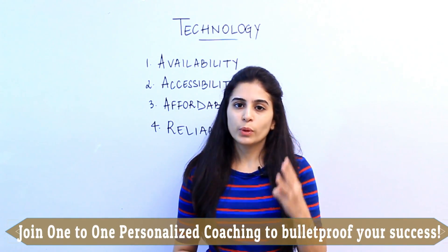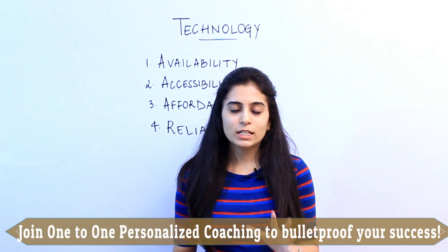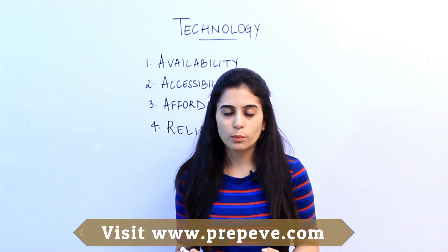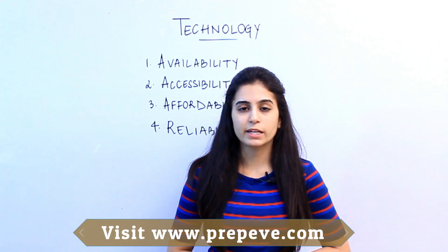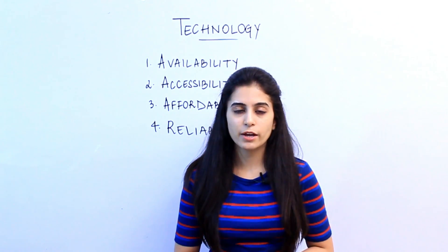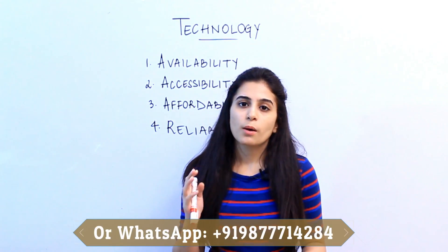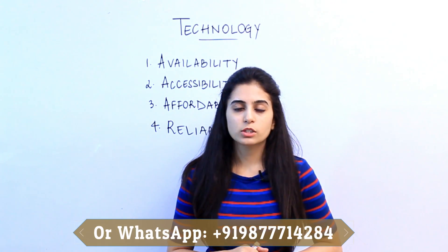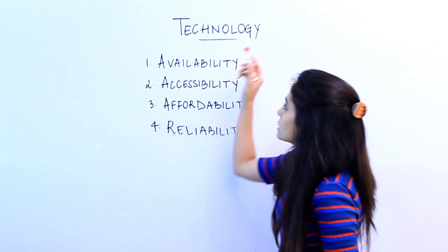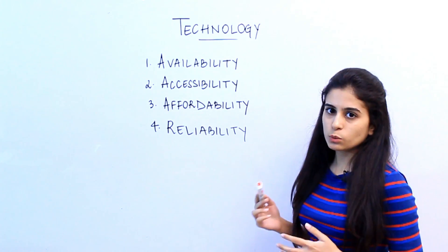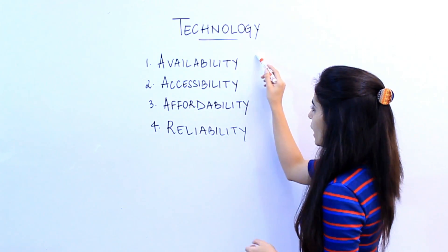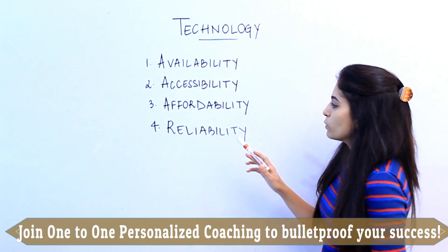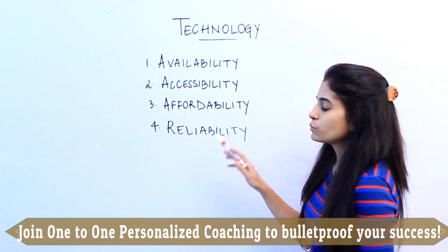Today we will be dealing with 4 generic words — 3 A's and 1 R. These words can be used in any of your essay topics, be it something associated with healthcare, transportation, products, local versus international products, as well as technology. The 3 A's are availability, accessibility, affordability, and the 1 R is reliability.